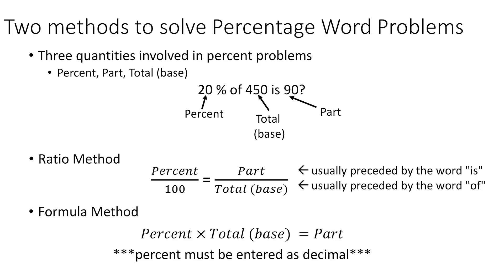The other way we can look at it is a formula method, which is the percent times the total is equal to the part. And you have to be a little bit careful with this formula because the percent must be entered as a decimal and not as the full whole number.